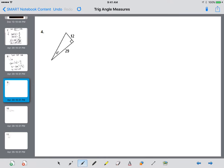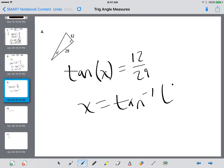So number four here. You would use tan. So the tangent of x is going to equal 12 over 29 equals the tan inverse of 12 divided by 29. So x is going to equal